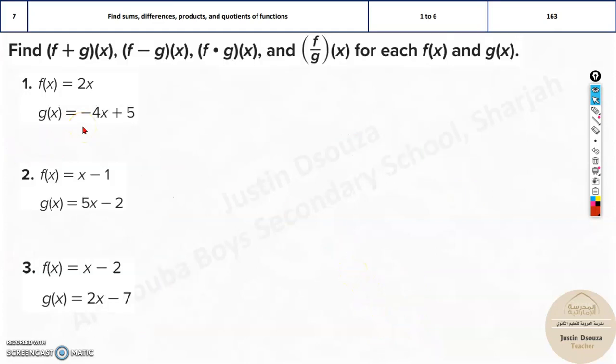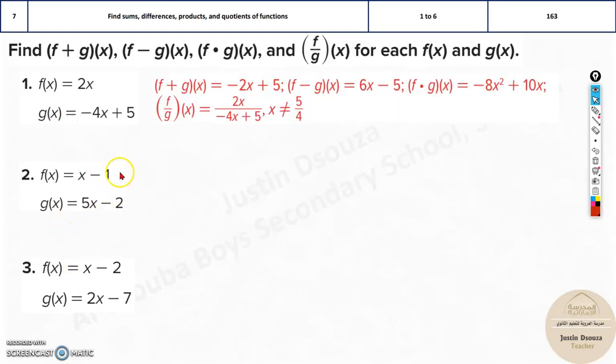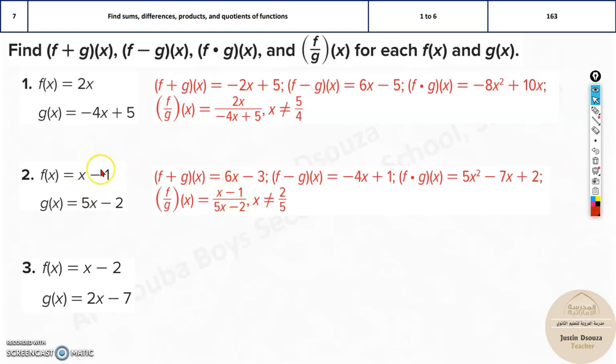Now, all these problems, you need to do it by yourself, because they are very straightforward. There is nothing over here. It's very simple. Just add them up. x plus 5x is 6x. Minus and minus will be adding, but you need to write the negative sign. Same way over here, you need to subtract. It will be minus 4x and plus 1. You need to multiply these. You can use the FOIL method, binomial multiplication.